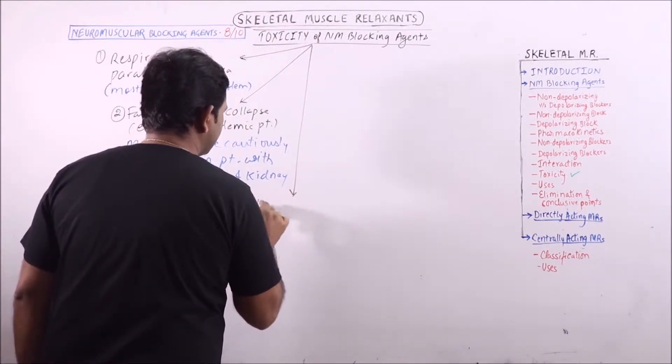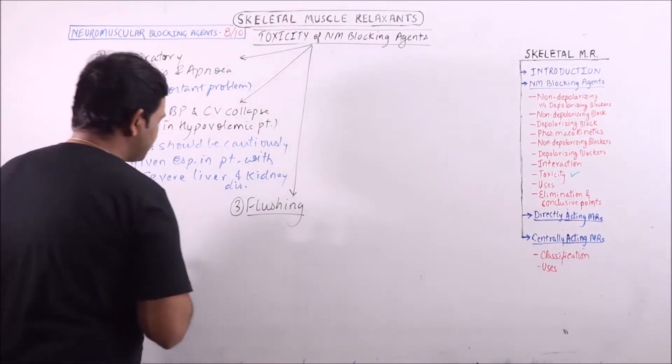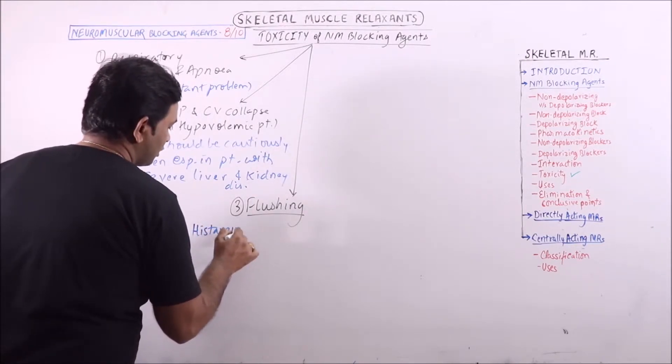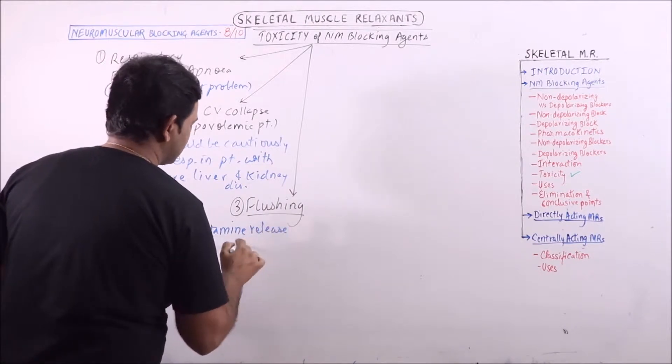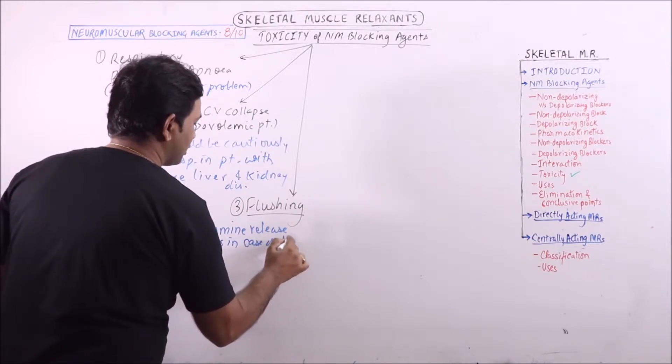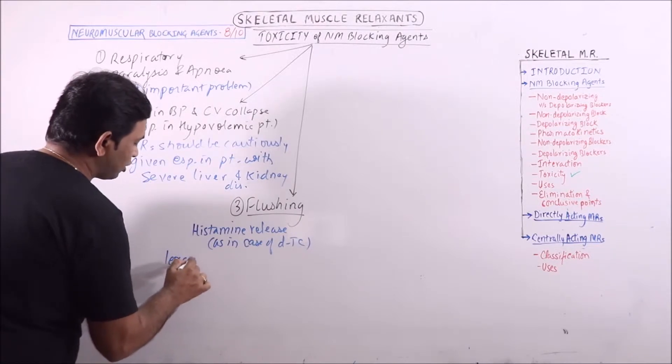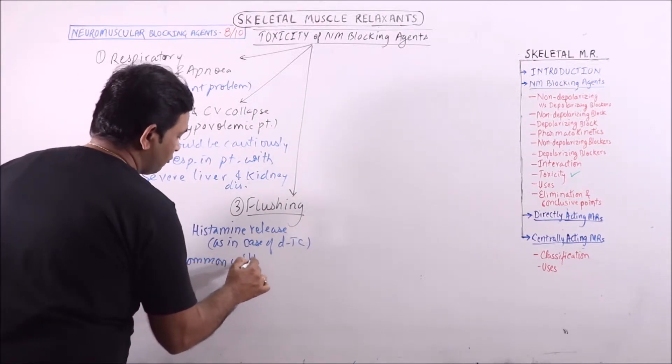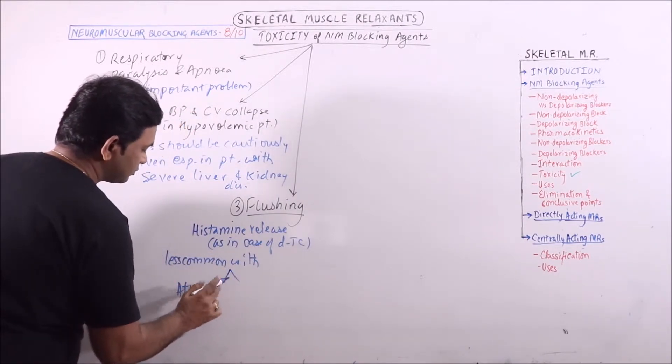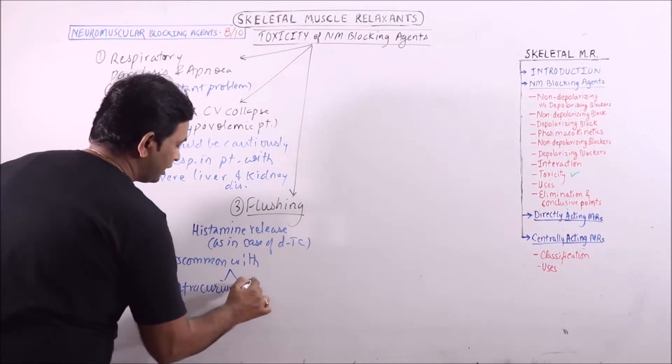Next one is flushing. Flushing occurs because of histamine release, as in case of d-tubocurarine. It is less common with atracurium and mivacurium.